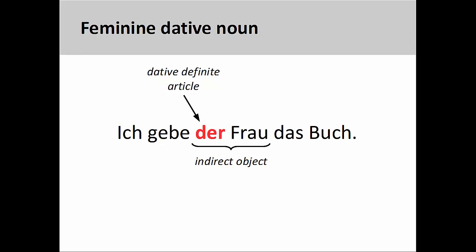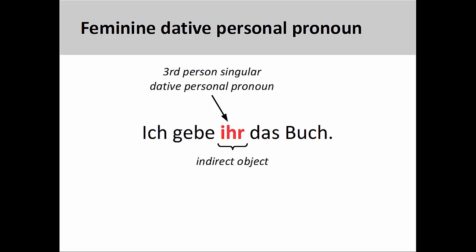If I were to use a feminine noun in the sentence, such as ich gebe der Frau das Buch — I give the book to the woman — the indirect object der Frau would be replaced by the third-person singular dative personal pronoun ihr. Note that the final letter, r, in ihr matches the final letter in the definite article der.